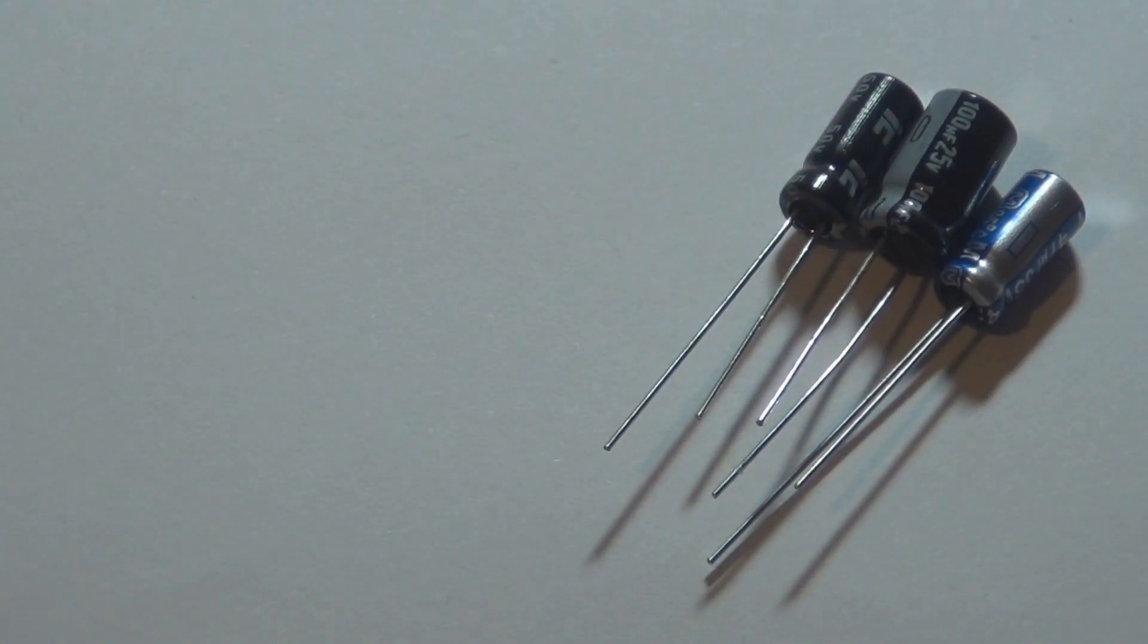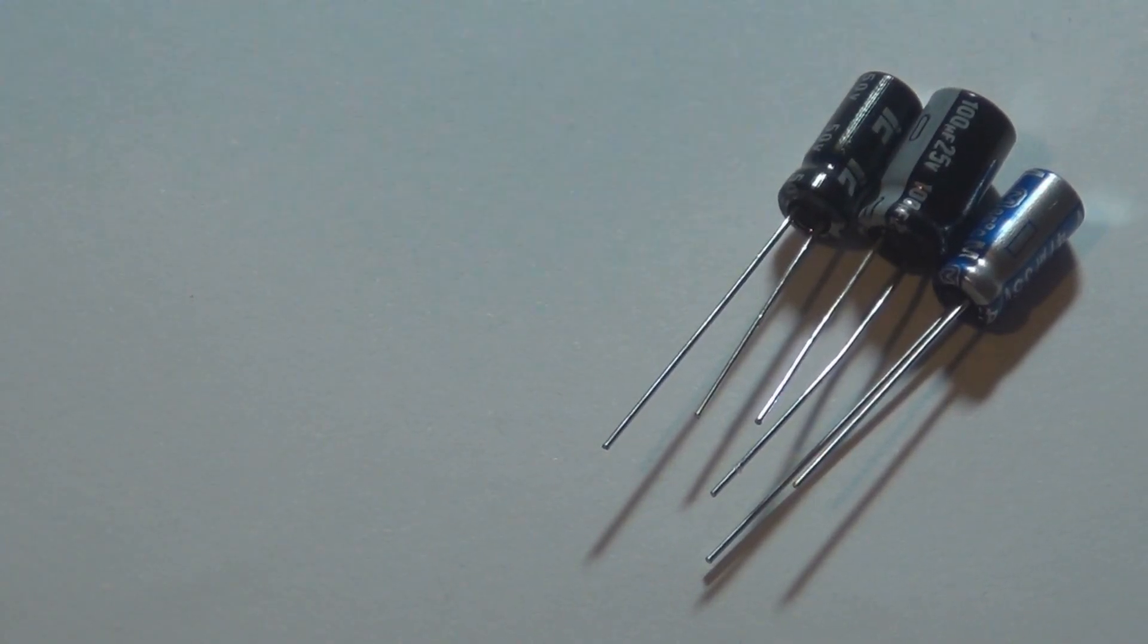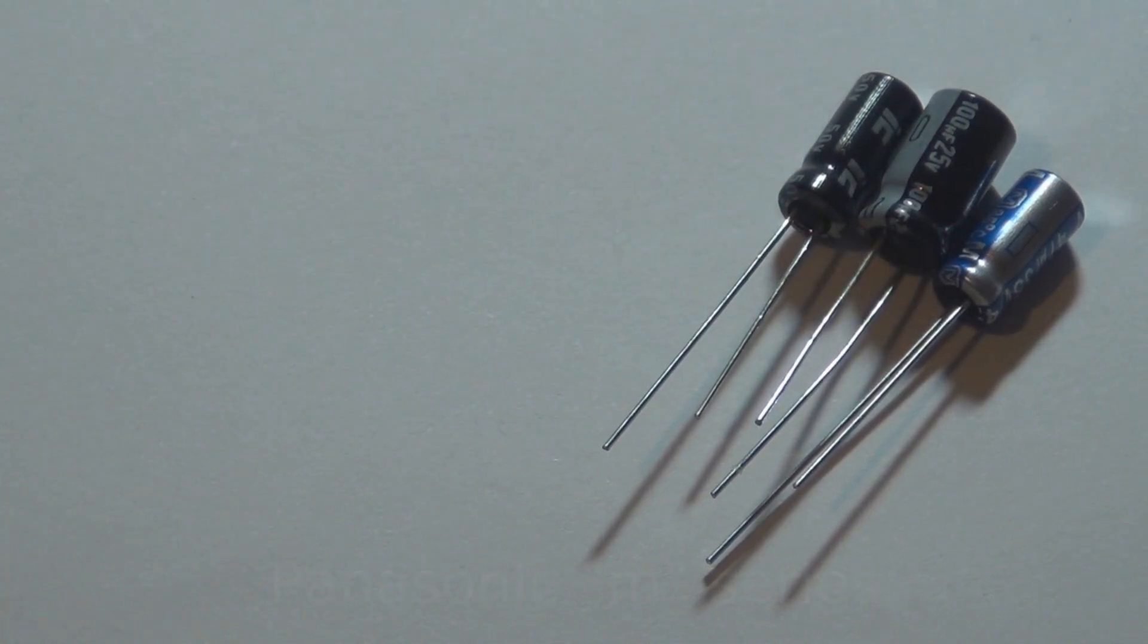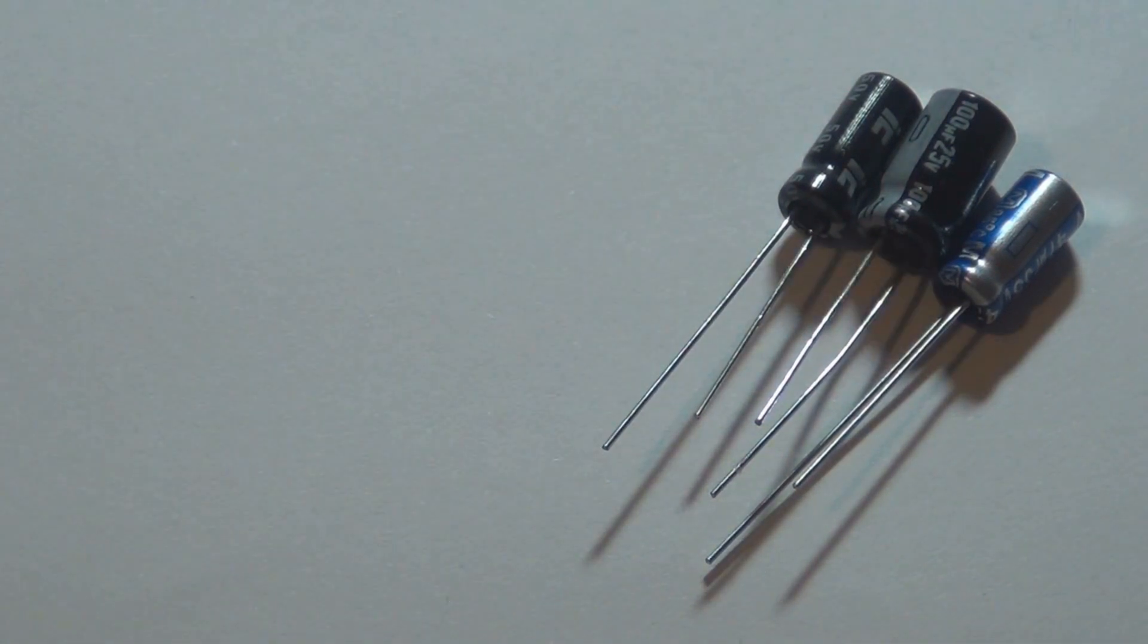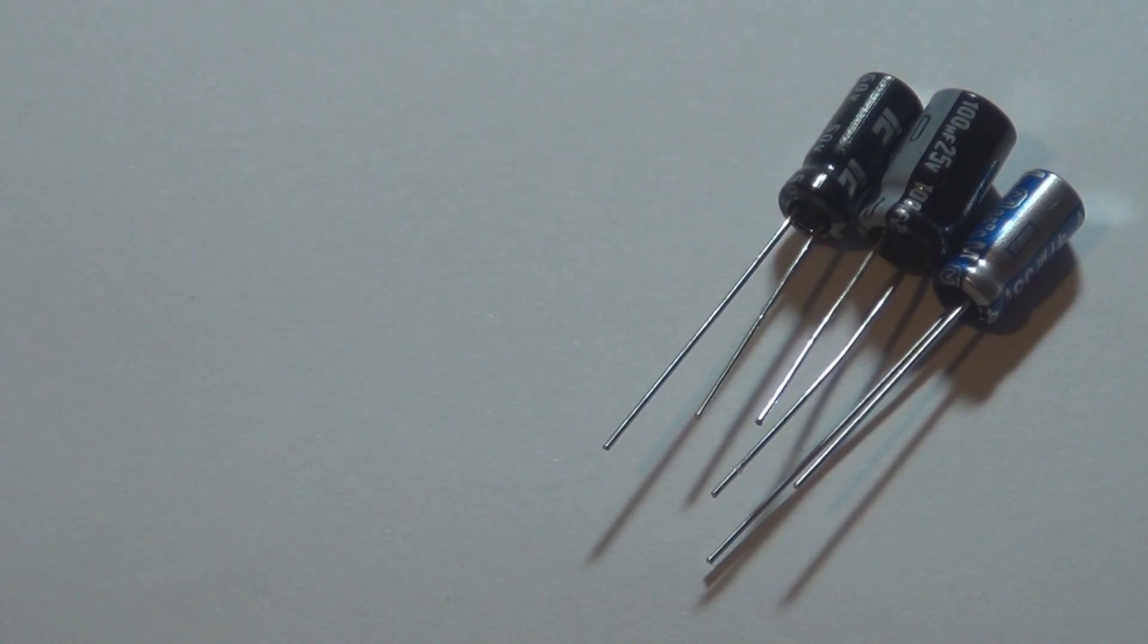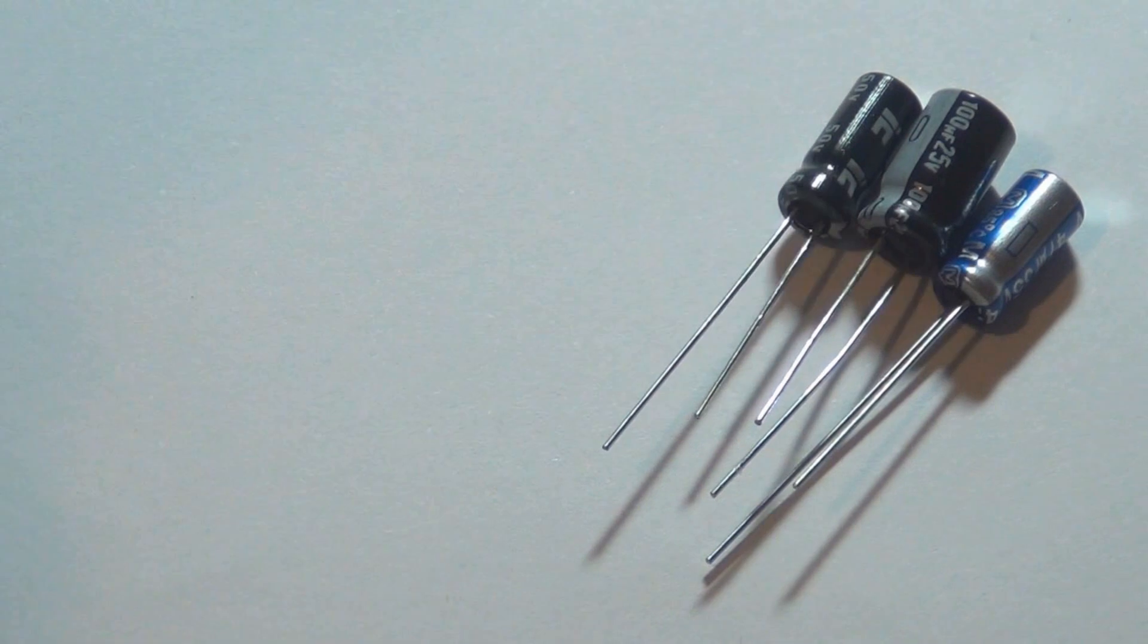And just while we're on the topic of electrolytics, if you want a cool looking electrolytic and a quality brand one, get the Panasonic electrolytics, the blue ones there. They look pretty cool. And obviously being Panasonic, they're going to be a reliable choice as well. I don't remember the series though. If you do, you can whack a comment down in the comments below. But yeah, they look really cool. And I'm going to show you the smallest capacitor you've ever seen at the end of this video.